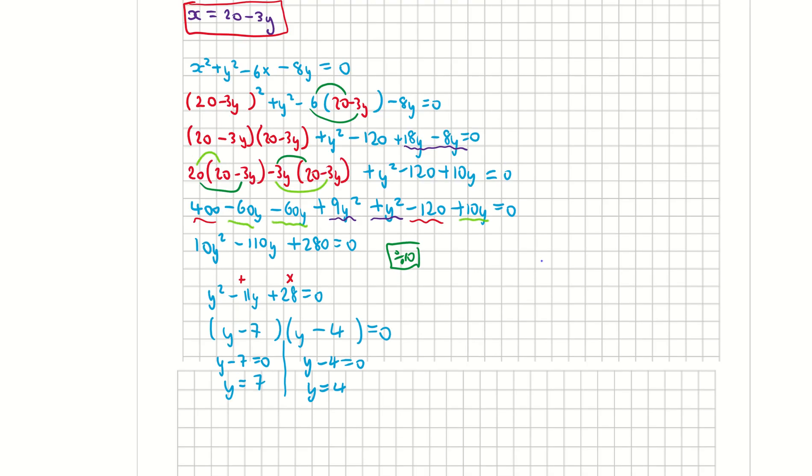So I found my two y's. I now need to get my corresponding x's. Remember what's happening here is we have a circle and we have a line cutting through that circle. We're looking for these two points, and I've got the y part of my points to be 7 and 4. So I now need to find my corresponding x's. Coming back up to the start, remember we had x = 20 - 3y.